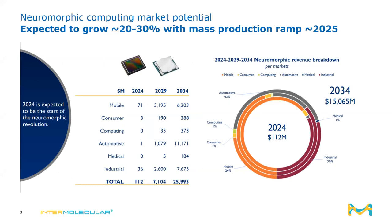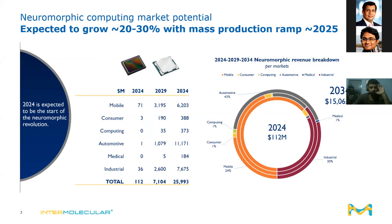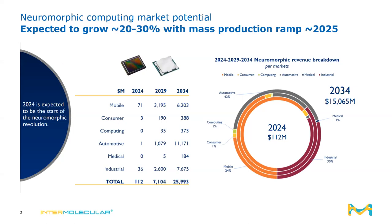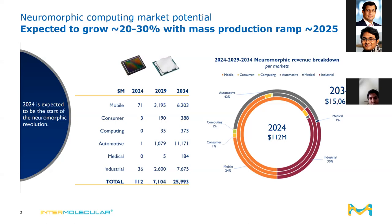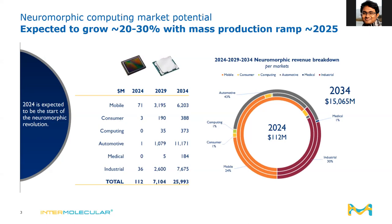The market potential of AI — what I'll describe as neuromorphic computing — is expected to grow 20–30% by 2025, expanding across different domains from mobile, consumer computing, and automotive. There is a huge market potential there.